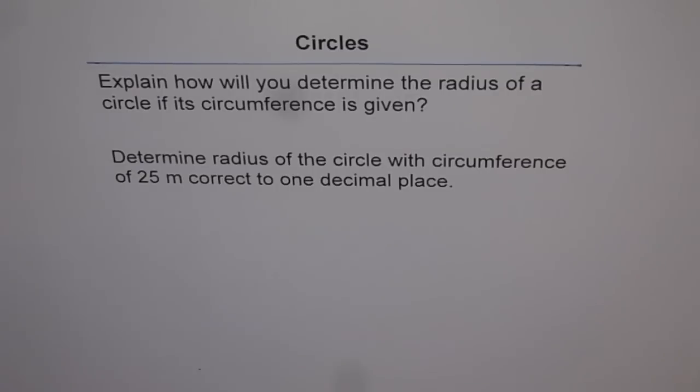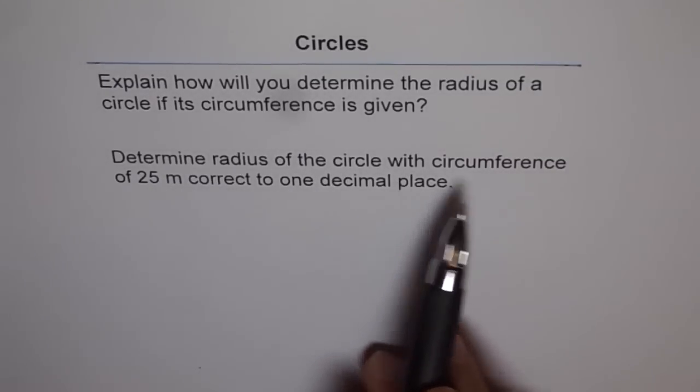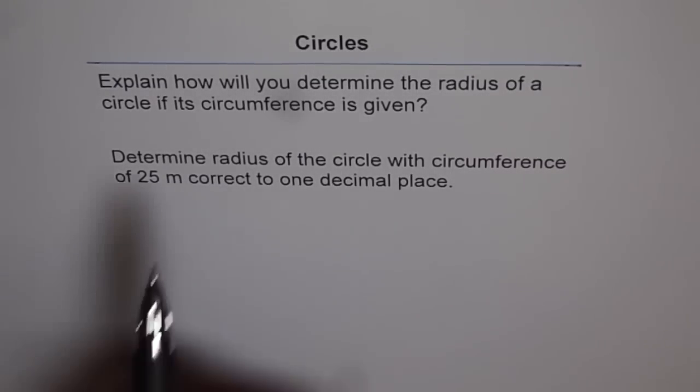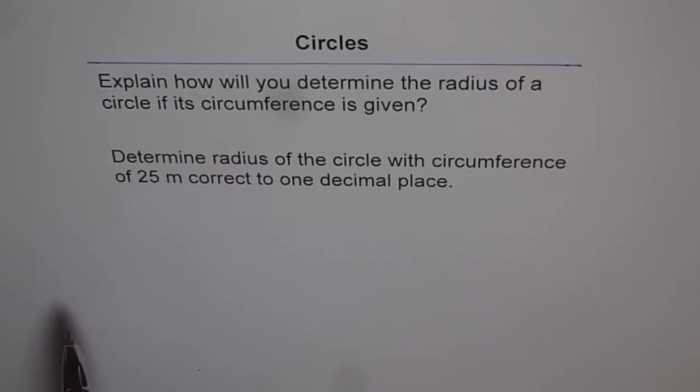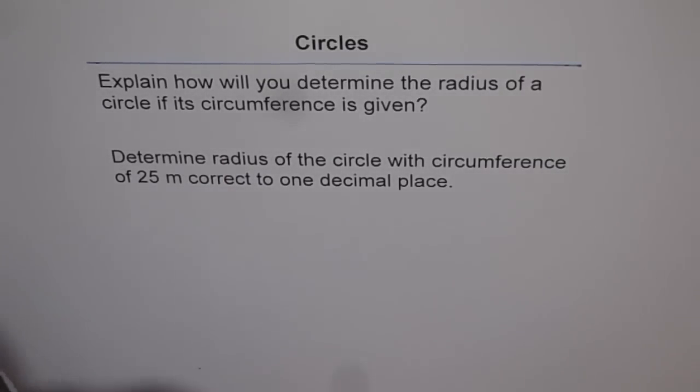It's basically reorganizing your formula and then isolating r from the circumference formula. The second part of this is, determine radius of the circle with circumference of 25 meters correct to one decimal place. So once you rearrange your formula, then you can do this numerical problem. Let's see how to do it.